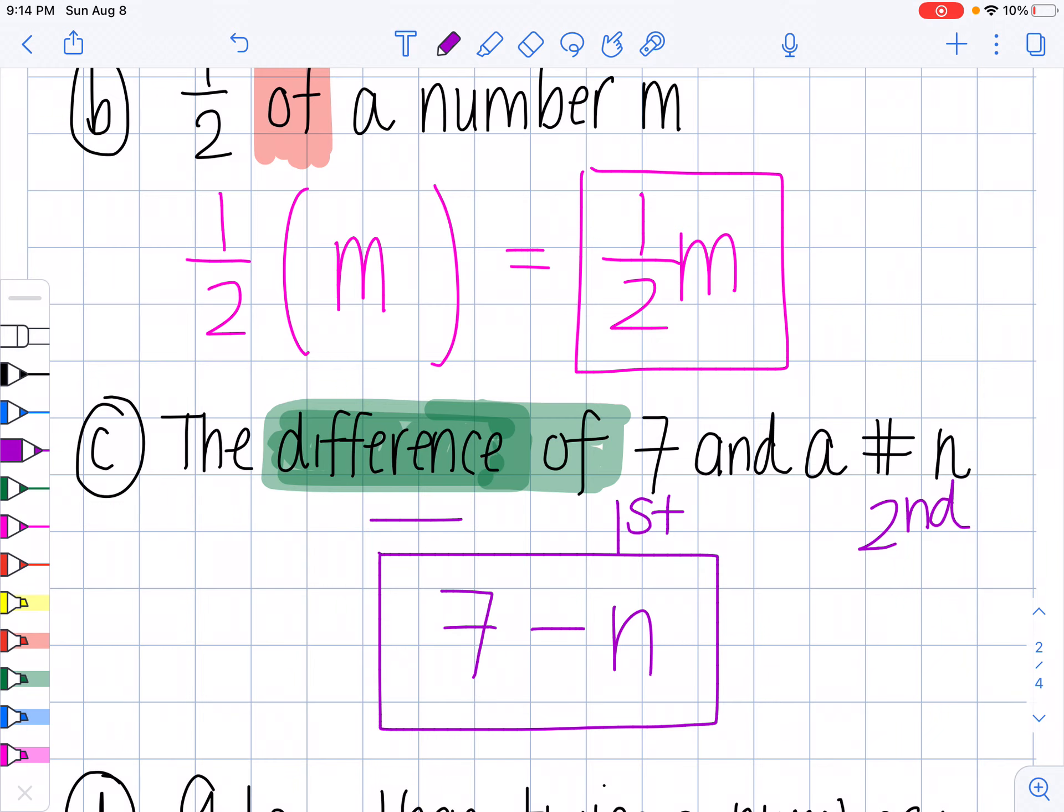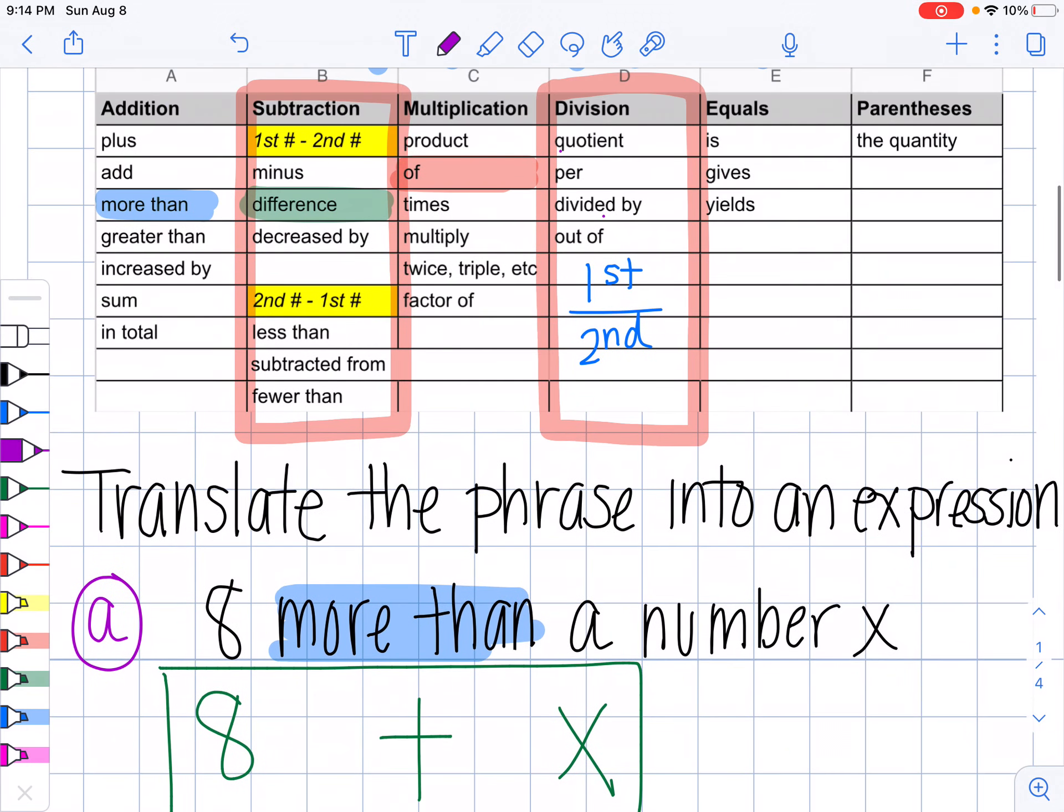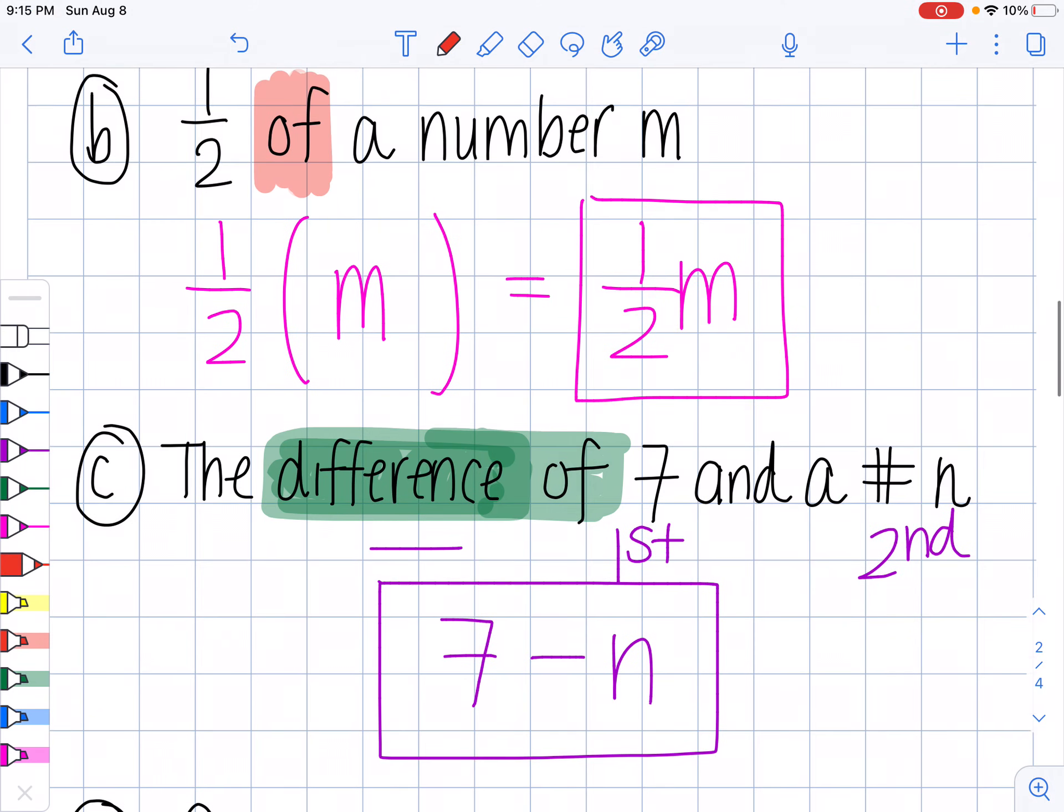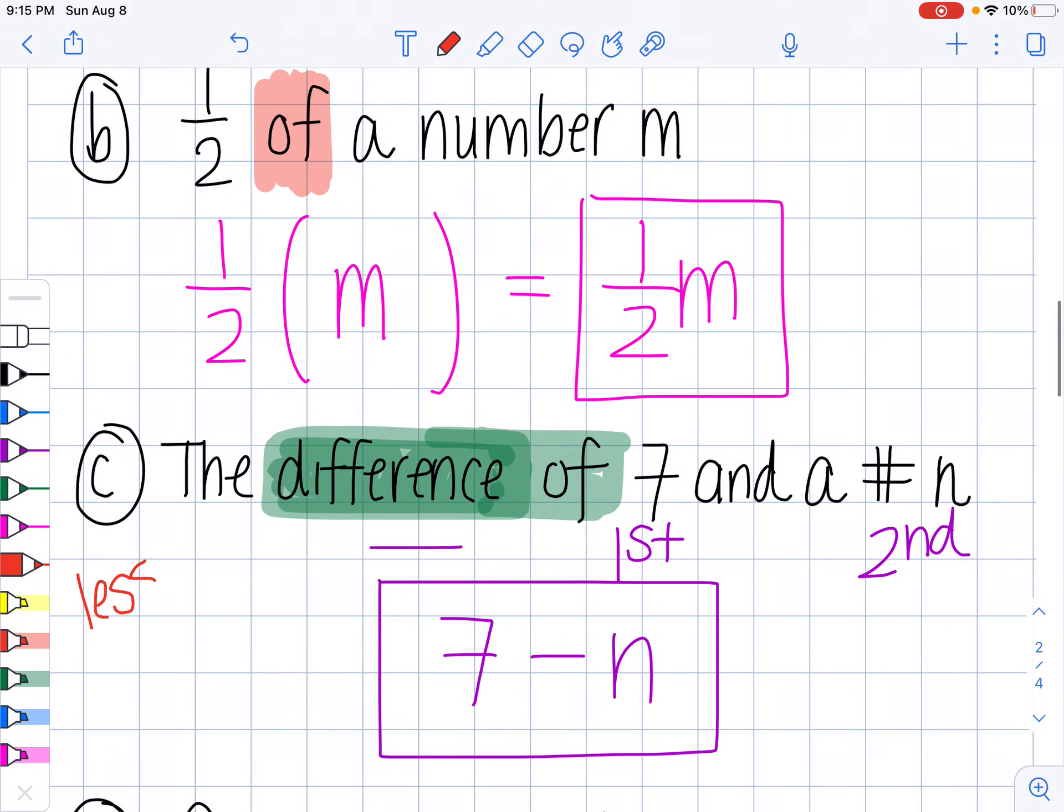Now, if it happened to be, let's just say it was less than. Okay, if it was less than, then I would do second minus first. So let's just say, and this is just, if this problem was written with less than, it would be N minus seven. You would write it the second number, what comes second minus the first part. Just so that you can understand what I mean by first minus second and second minus first.